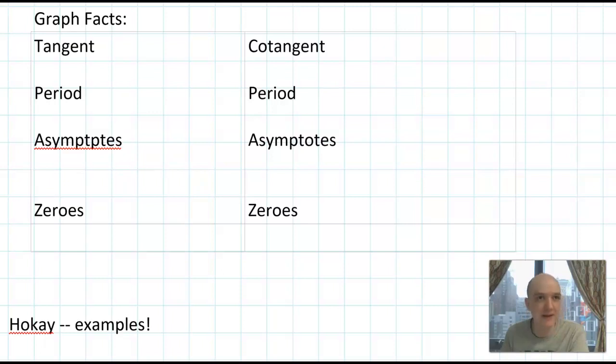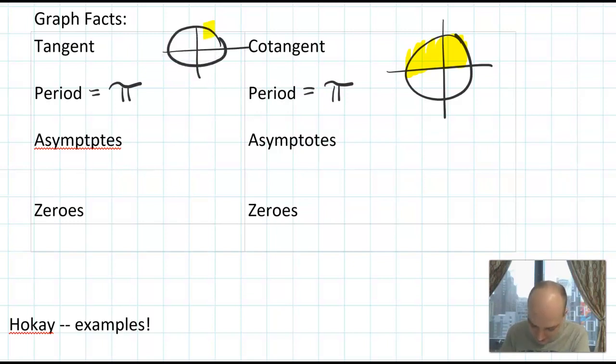As we saw before in the previous lecture, the period of the tangent graph is π. And the period of the cotangent graph is π. The idea for both of those periods is that the graphs repeated every half circle. For cotangent, it's kind of the upper and lower halves of the circle. And for tangent, it's kind of the right and then left halves of the circle. But they repeat every half circle, which is why the period is π.